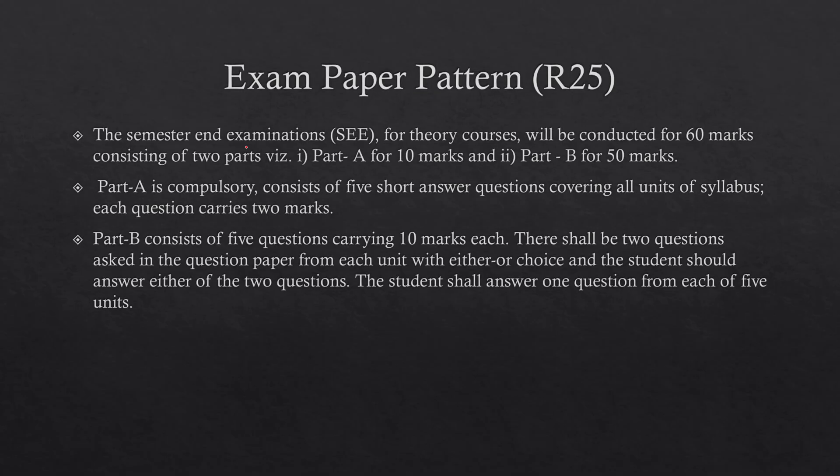Now if you look at the exam pattern, Part A you will have 10 marks and Part B you will have 50 marks. In Part A you will have 10 marks where one question consisting of two marks from each unit will be there. Part B will be carrying 10 marks each. Every unit you will have 12 marks compulsory from every unit.